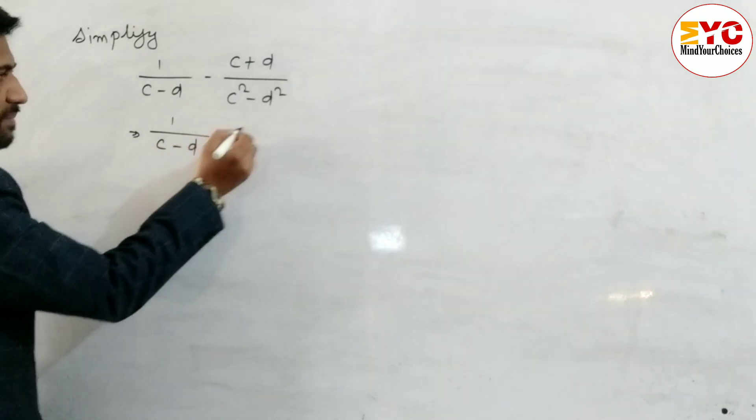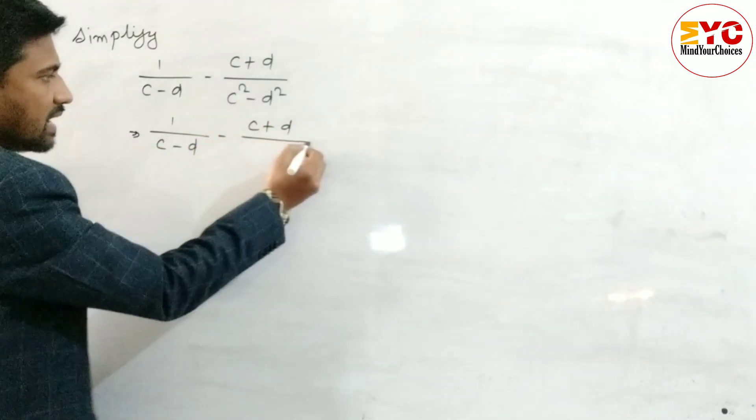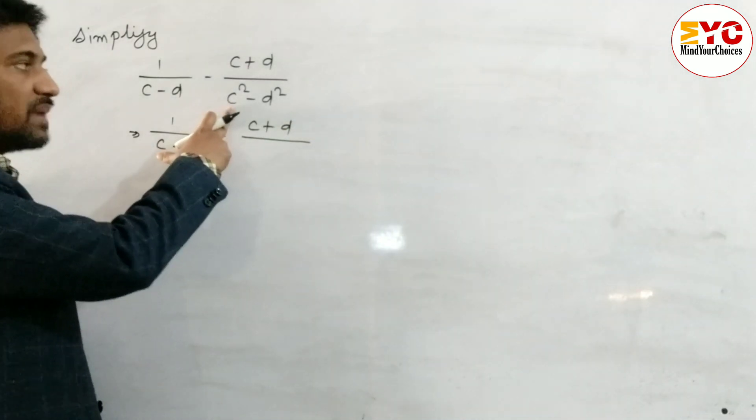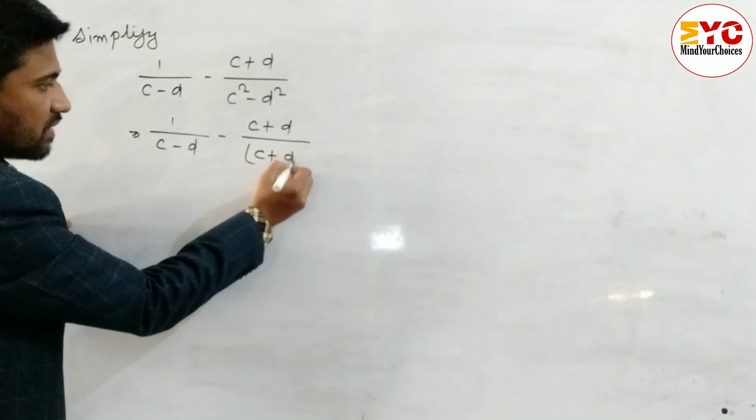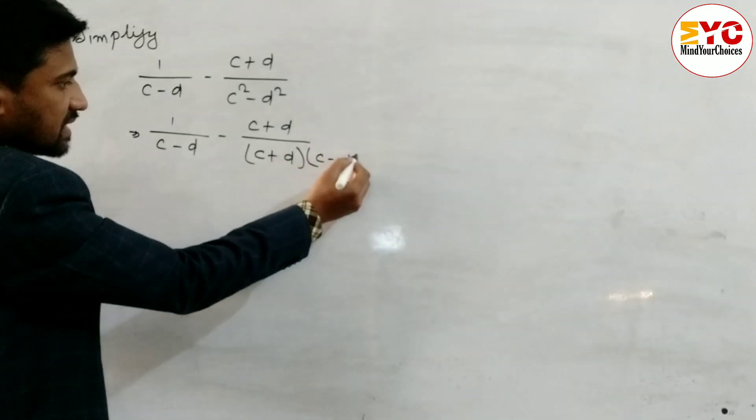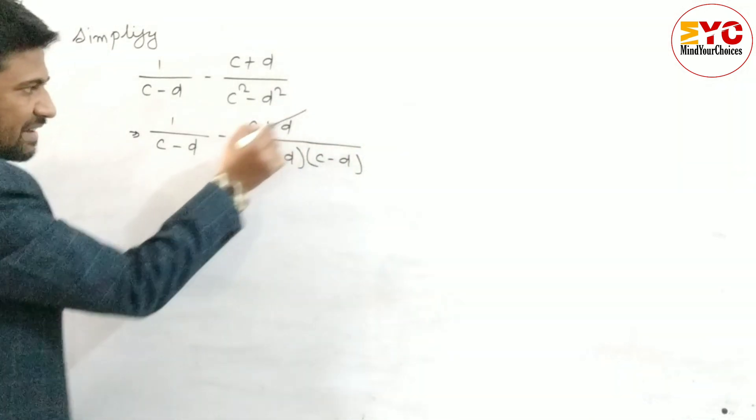We have to write minus c plus d by this in the form of formula a square minus b square. C square minus d square we have to use here: c plus d times c minus d. So we can write here c plus d c minus d. After this we can remove this one.